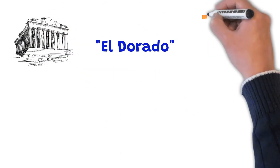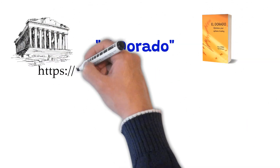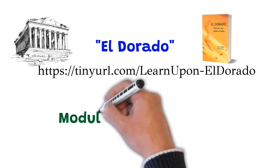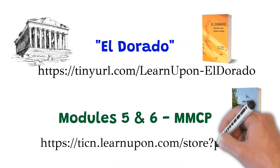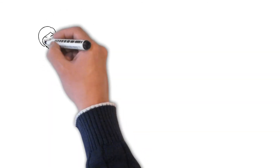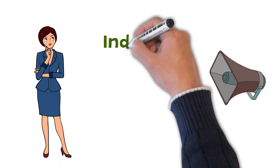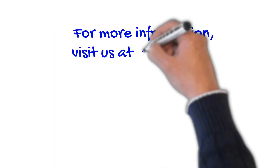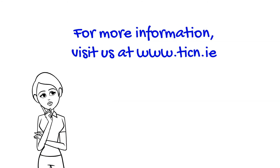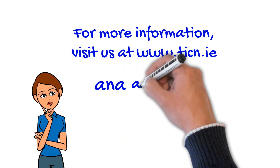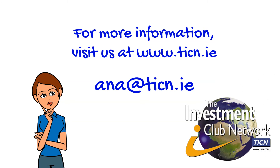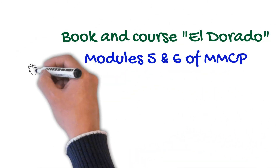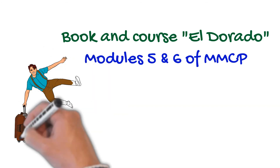Learn more about the Greeks in our course and book El Dorado — you can find the links in the comments. You can also learn more about options in modules 5 and 6 of our seminar MNCP, with the link available below. Please stay tuned for our next video in which we will talk about indicators. For more information, visit us at www.ticn.ie or email us at ana@ticn.ie. You can find the links to our online education and the books in the description below.